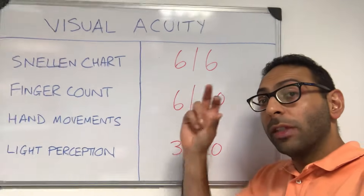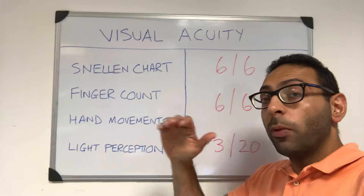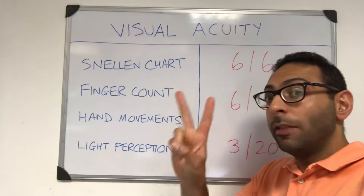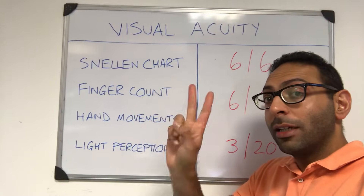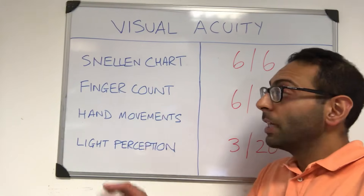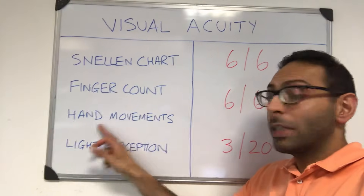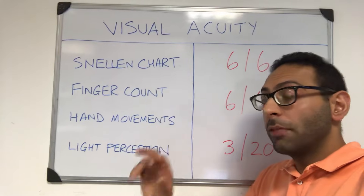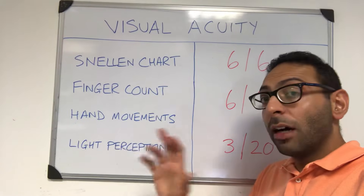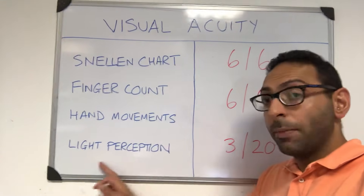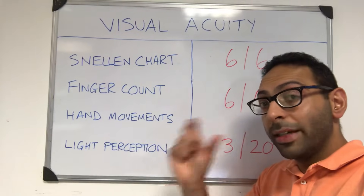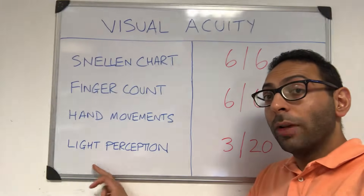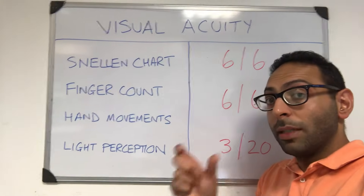Once you get to a stage where they can't see even the top line at a meter, you move away from Snellen charts and move to finger counting — you may see this written as FC. How many fingers can the patient see in front of them? If they can't count fingers, you move on to hand movements: can they see hands move or stop? This may be written as HM. If they can't see hand movements, you go down to light perception — can they perceive light? This may be written as PL, or NPL for not perceive light.